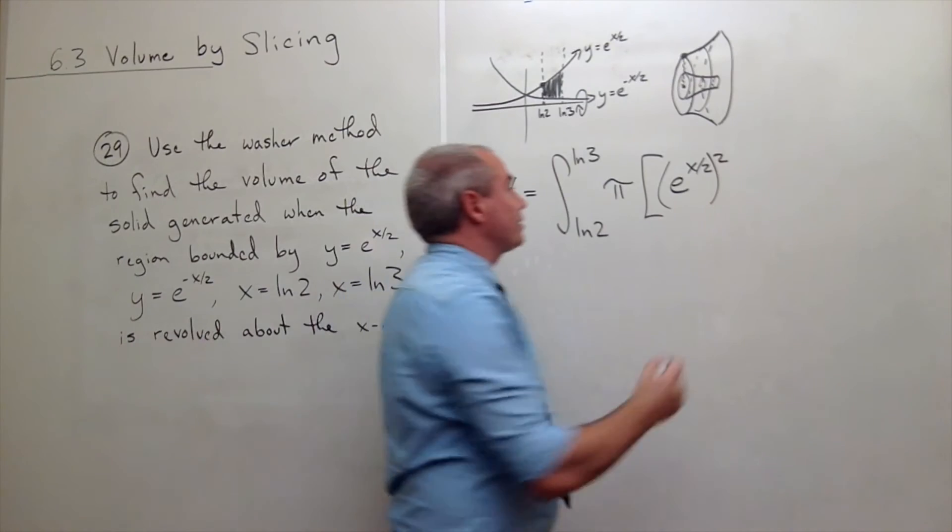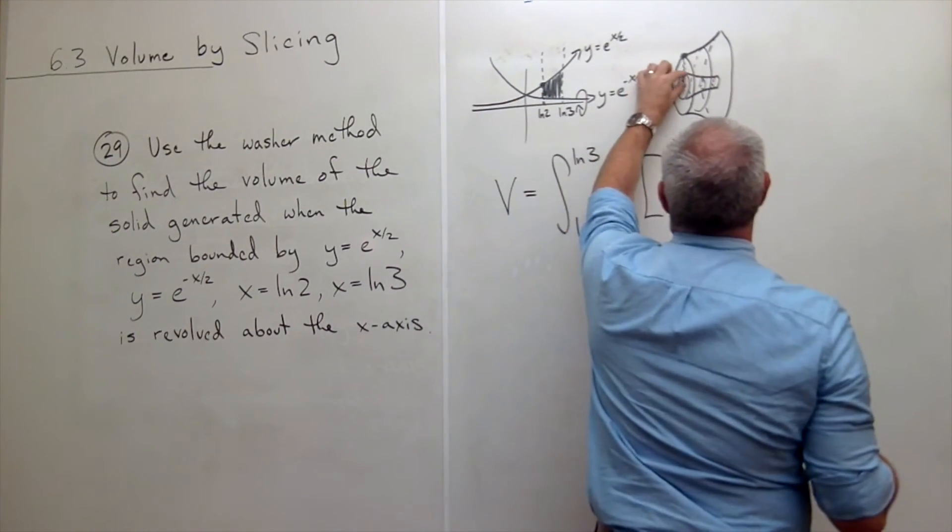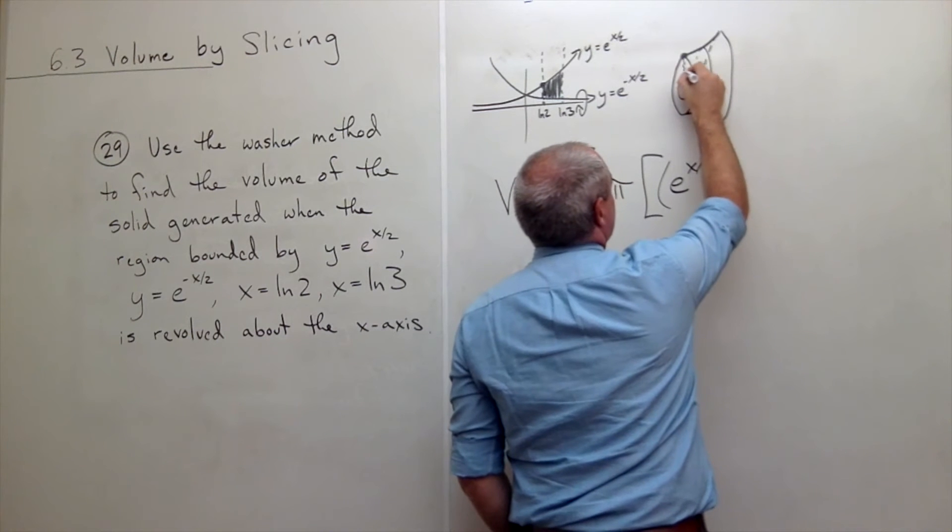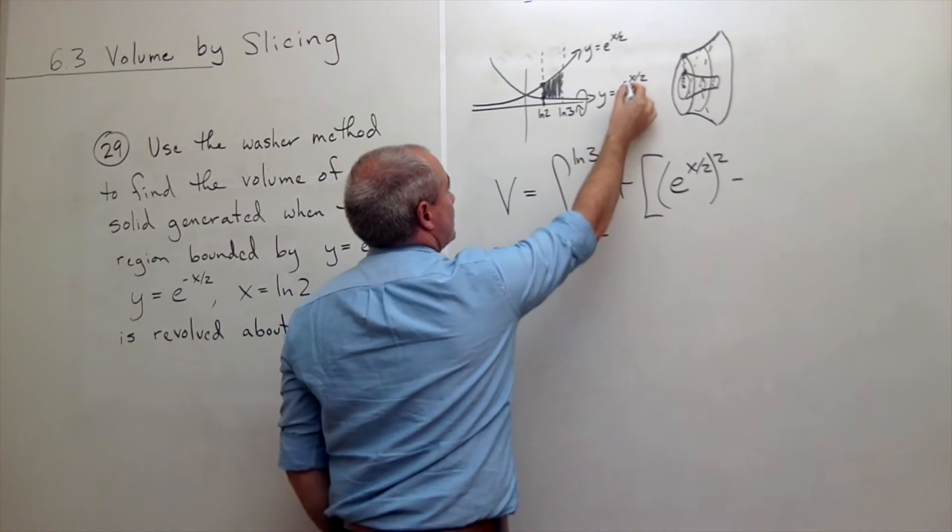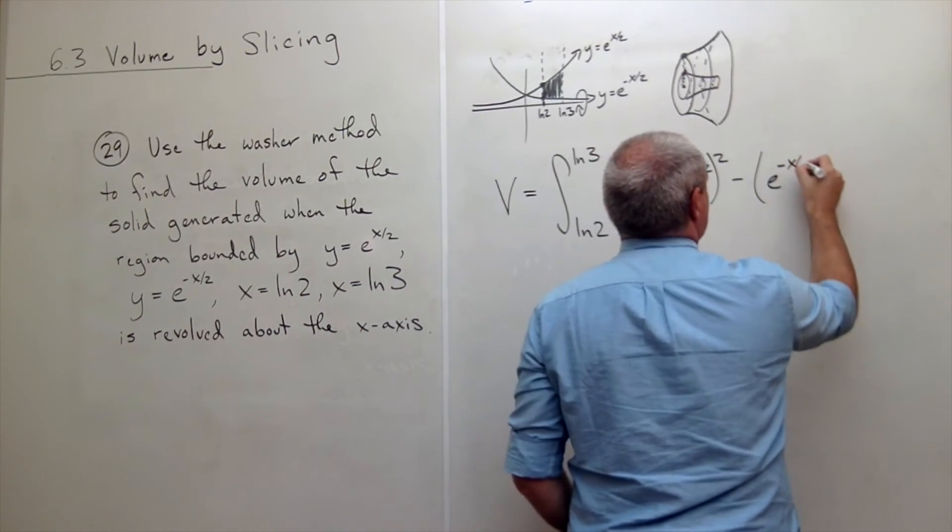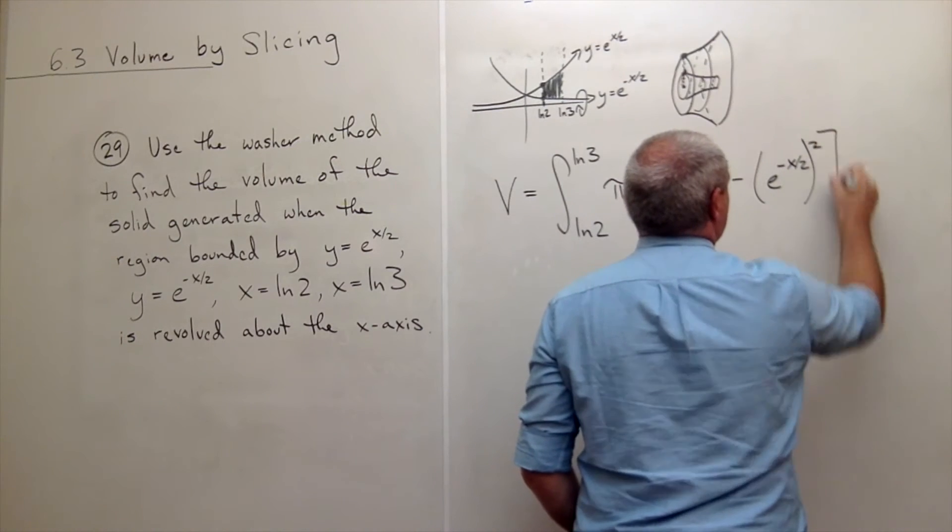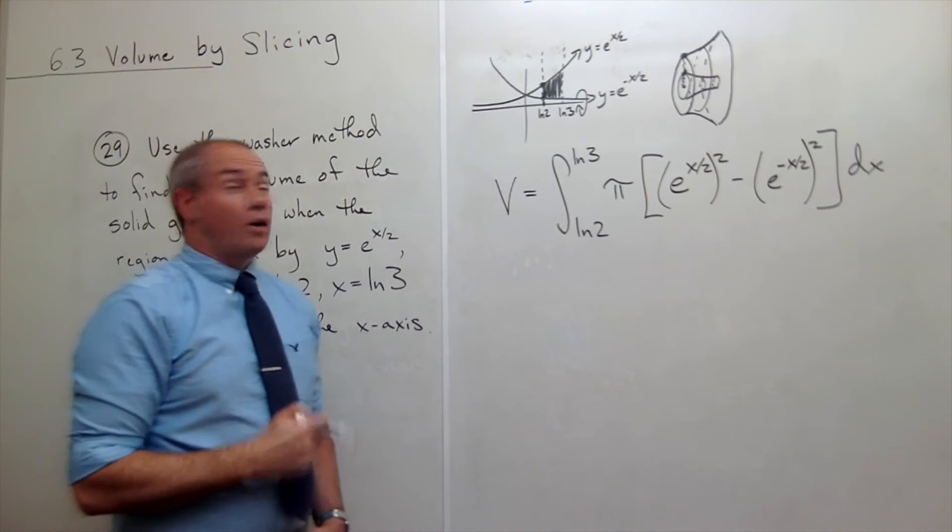Then I want to subtract the inner radius squared or the little radius squared. Well, what function gives me that inner radius? That's e to the negative x over 2. So I have e to the negative x over 2 squared dx. Alright.